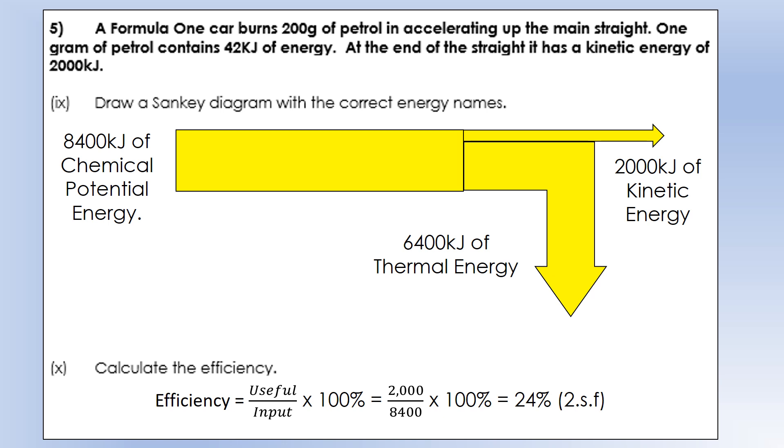We're producing 2,000 kilojoules of useful kinetic energy. That's what we want from a car. That means we're wasting 6,400 kilojoules in the form of thermal energy. We've got friction, air resistance, transferring that to thermal energy and sending it to the surroundings. The efficiency is going to be 2,000 over 8,400, giving us 24%, which is a very typical car efficiency.